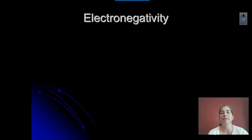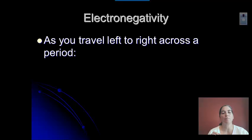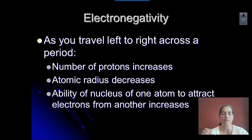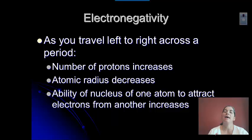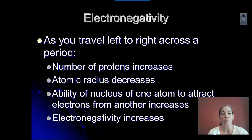Let's talk about electronegativity — the ability of an atom to attract electrons to itself in a compound; it has to be in a compound. As you go from left to right across a period, the protons are increasing and the atomic radius decreases, so the atom is getting smaller. A smaller atom can attract electrons to its nucleus much more easily, because that nucleus is going to be much closer to the outer electrons of the neighboring atom than a larger atom. So electronegativity increases as you go left to right, and it's easier for an atom to attract electrons to itself.